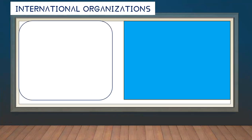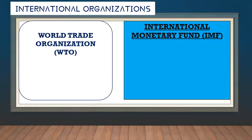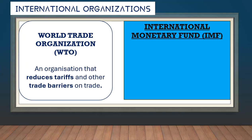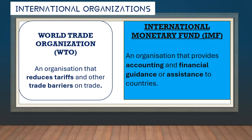We also have international organizations: the World Trade Organization and the International Monetary Fund. The WTO focuses on reducing tariffs and trade barriers — essentially promoting trade liberalization. The IMF, on the other hand, is an organization that provides financial and accounting guidance or assistance to countries. If a country needs to borrow money or is running a deficit, it can borrow from the IMF.